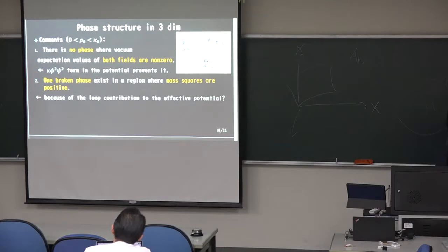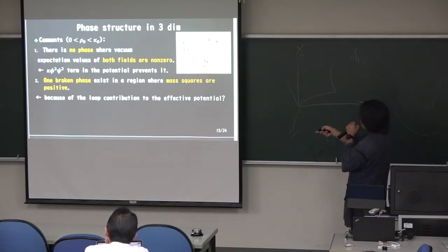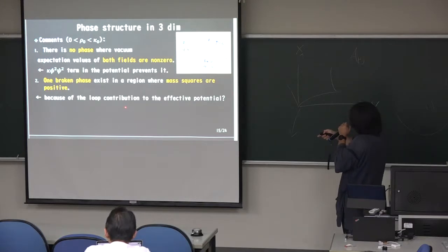These terms are large. So if Phi and Psi are non-zero, these terms contribute, prevent, these terms become large. And that is not the minimum point. Second. One more phase exists in a region where mass square is positive, like this, like this, like this. So this is because of the loop effect, loop contribution to the electric potential.